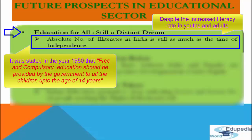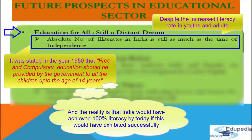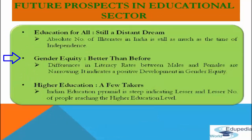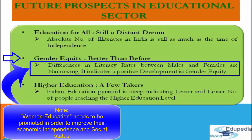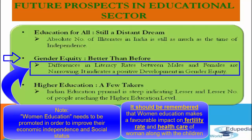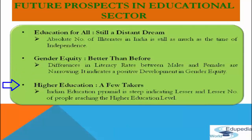Had this been achieved, India would have reached 100% literacy by now, but it has not been achieved yet. On gender equity, the differences in literacy rates between males and females are narrowing, which indicates a positive development. However, women's education still needs to be promoted to improve their economic independence and social status, and because women's education has a favorable impact on fertility rates and health care of women and children.